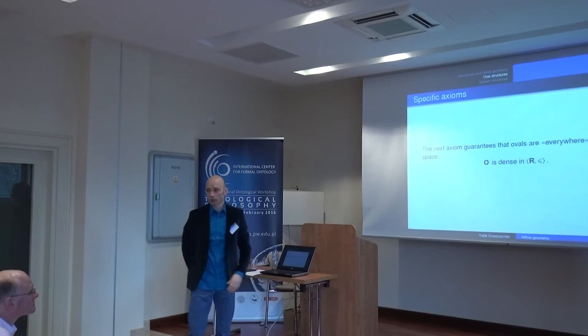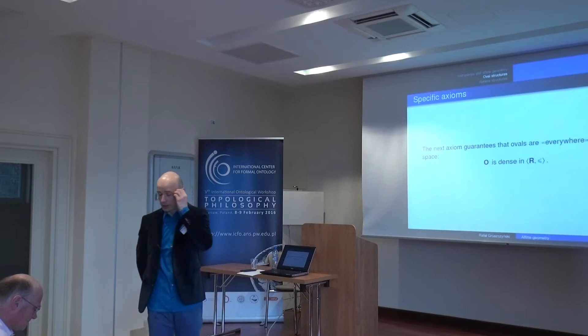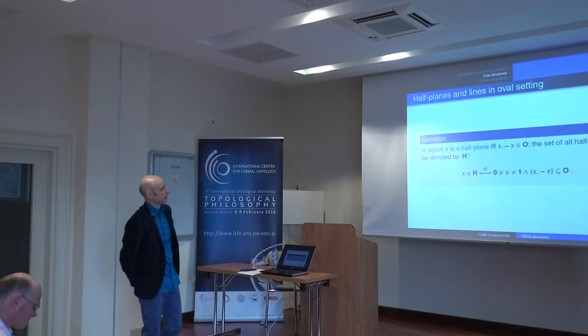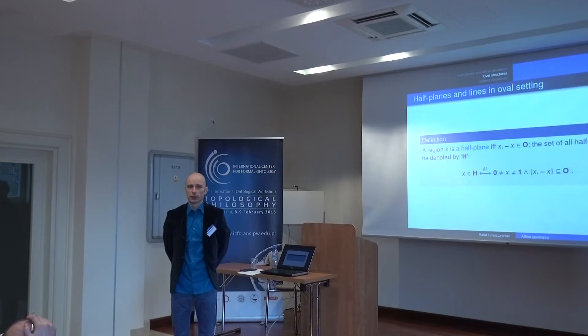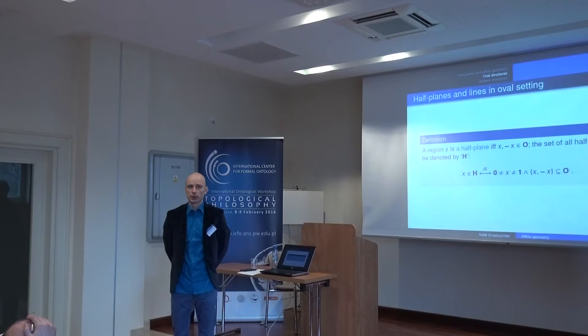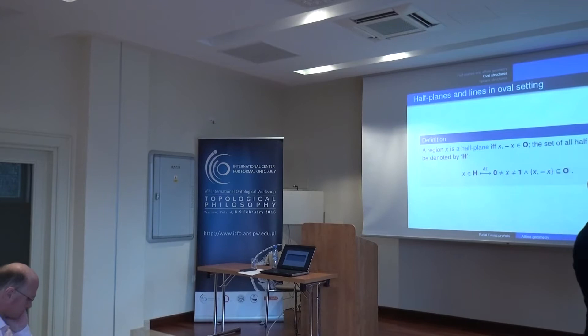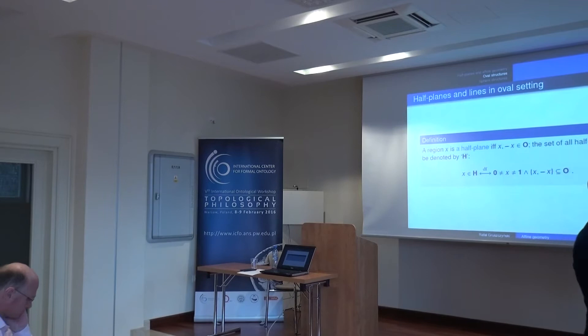The second axiom guarantees denseness — ovals are in every part of the space. We defined half-planes as the subset of ovals closed under complement: an oval H is a half-plane if its complement is also an oval. For example, a bounded oval is not a half-plane because its complement is not an oval, but an oval extending to a half-space is a half-plane because its complement is also an oval.